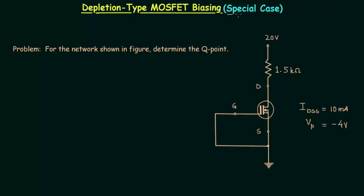Now in this presentation, we will discuss one special case of depletion-type MOSFET biasing. If you remember the introduction to depletion-type MOSFET biasing, I told you the biasing in case of depletion-type MOSFET is same as biasing of junction field-effect transistor.